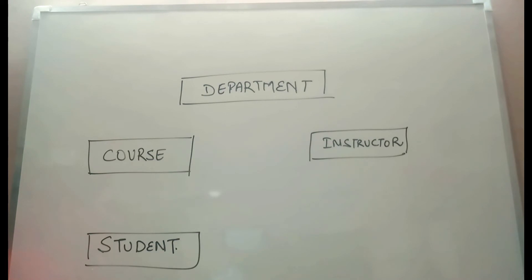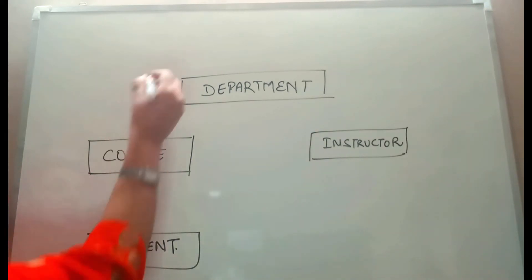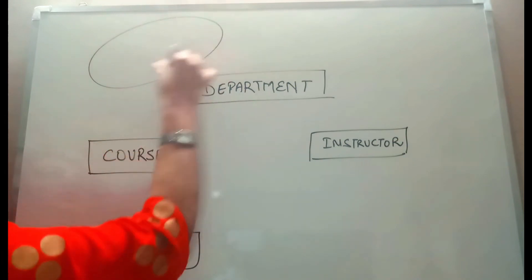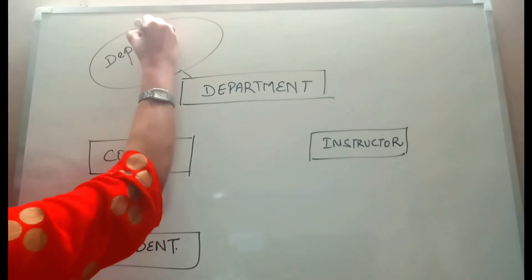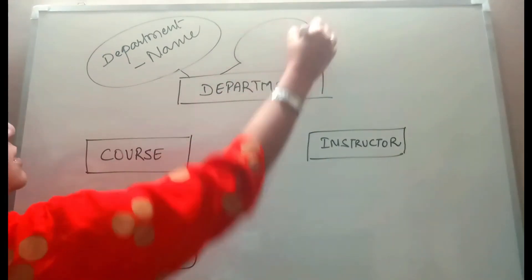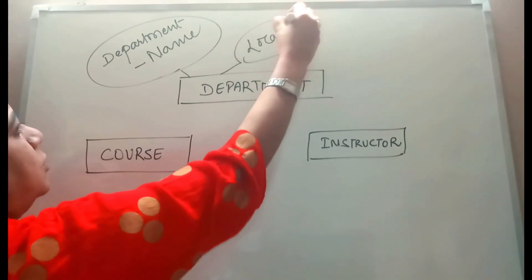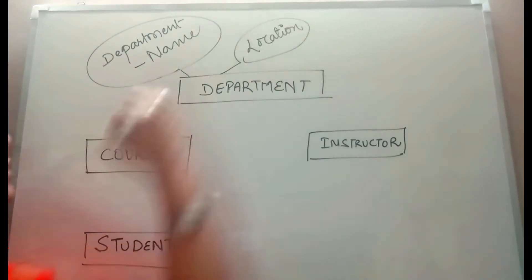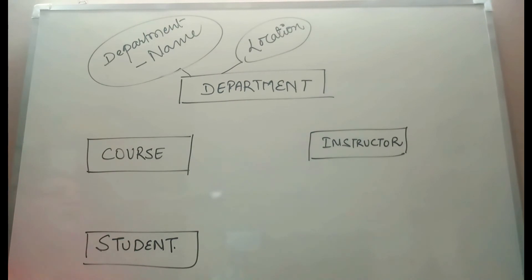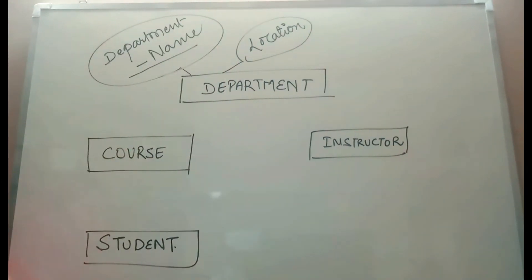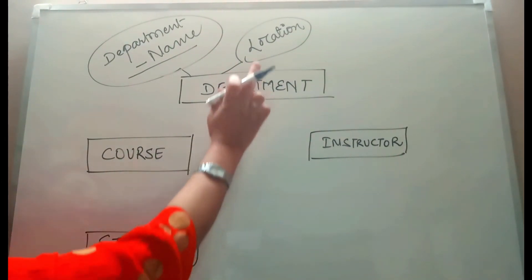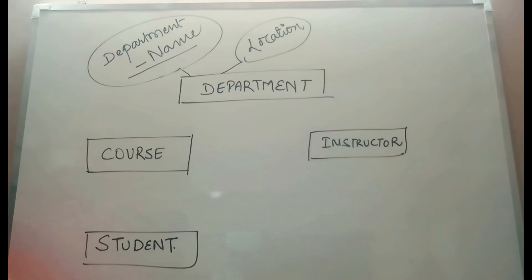For the department entity, we have two attributes: department name and location. Department name is the primary key, which we have underlined. So we have drawn the department entity with its two attributes and the primary key underlined.